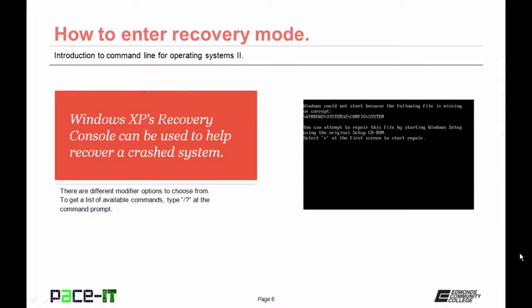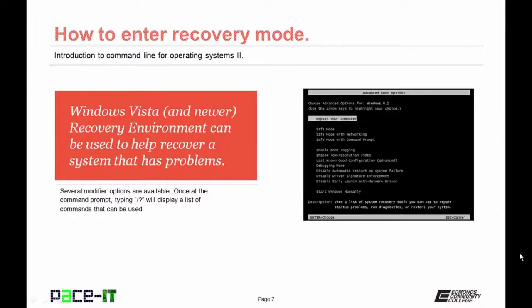The recovery console in Windows XP is used to help recover a crashed system. Once you have the command prompt, you can type forward slash question mark and then Enter to see the list of available commands. The recovery environment in Windows Vista and newer works the same way — used to help recover a system that has had a problem, and you can type forward slash question mark to list available commands.